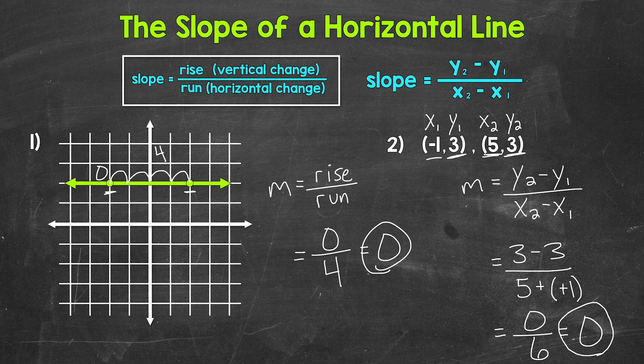That tells us we have a horizontal line. And if we look at the coordinates here, we can see that we have the same y coordinate, 3 and 3. So there's no vertical change between these two points. So again, this is a horizontal line.